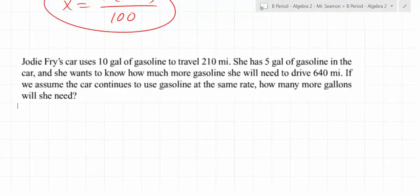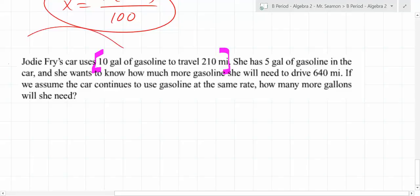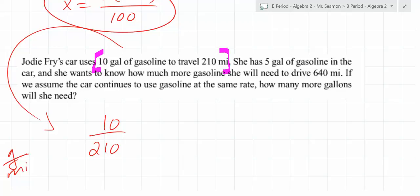It's identical to what we just did right here. So we have a car. It uses 10 gallons of gasoline to travel 210 miles. So let's just pause right there. 10 gallons of gas to travel 210 miles. What is that? It's going to be 10 over 210. So that's gallons per mile. She has 5 gallons of gasoline in her car and she wants to know how much more gasoline she will need to drive 640 miles. How many more gallons will she need? So what do you need to answer first? Do not write the equation. Assign a variable, but you need to know what x is first. Number of additional gallons of gas.